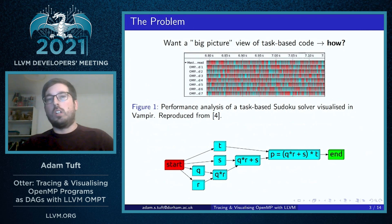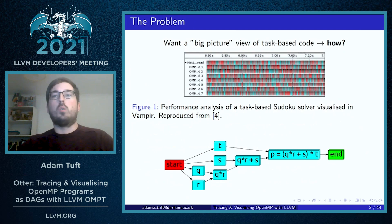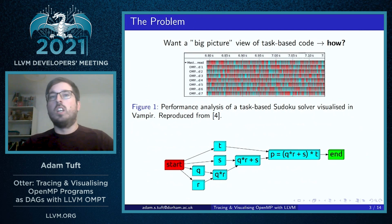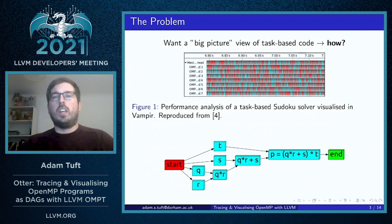This is what we can see here in Figure 1. This is a performance analysis of a typical task-based Sudoku solver visualized in Vampir, and we can see the little colored segments there represent individual tasks.